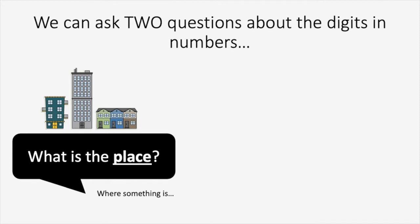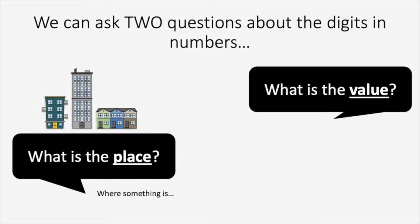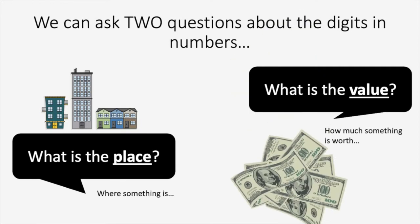The second question we can ask is: what is the value? When we're talking about value, we're talking about how much something is worth. It's helpful to think about money, because we know that different coins and different dollar bills are worth different amounts. For example, this $100 bill is worth $100. So when we're thinking about numbers, we can answer questions about the place — where something is — or the value — how much something is worth.